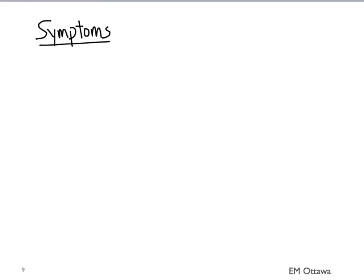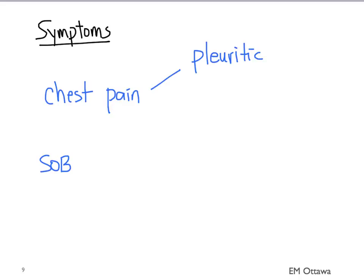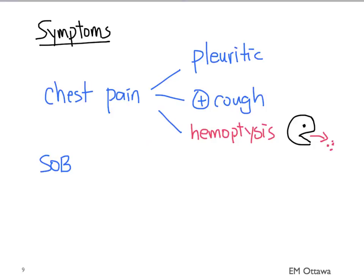Now let's look at how patients present. We'll first talk about symptoms and then the signs on physical exam. Patients often present with chest pain and/or shortness of breath. The chest pain can be pleuritic — that is, the patient feels the pain is worse when they take in a big breath. It can be associated with a cough or hemoptysis. For shortness of breath, patients can describe poor exercise tolerance, or since the patient is breathing faster, they may complain of anxiety symptoms.